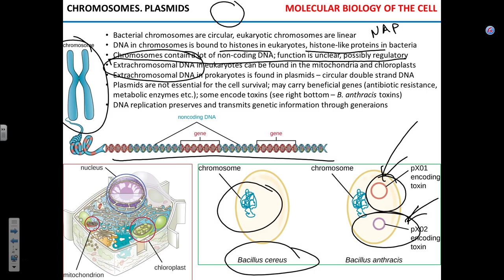The problem with plasmids is that they can easily be transferred from one bacterium to another. Remember conjugation — bacterial sex? One mechanism of genetic exchange is giving a copy of the plasmid to another microbial cell. If the plasmid carries an antibiotic resistance factor, once you have it in one cell you pretty much have it in the entire population by the end of the month.